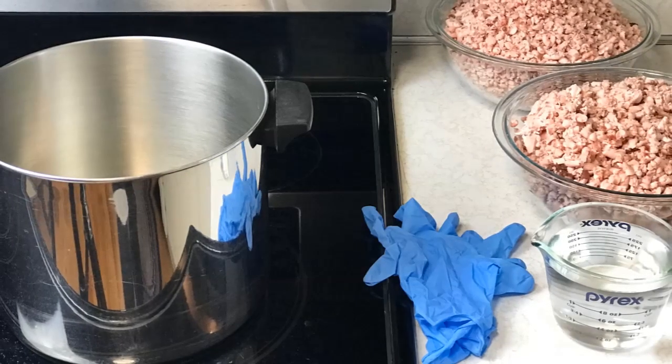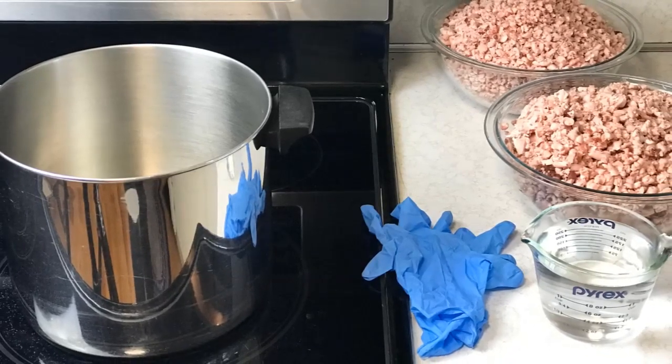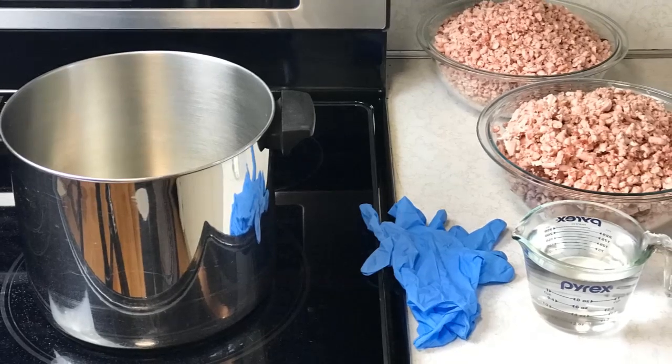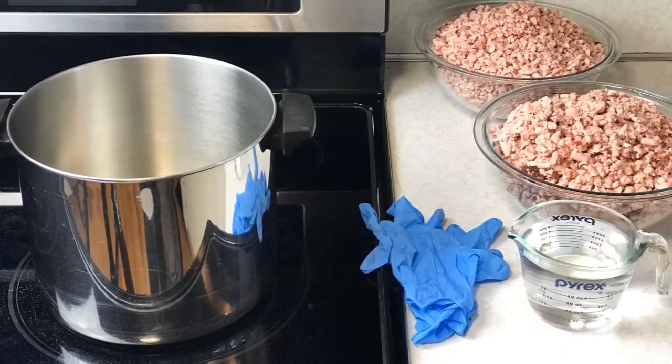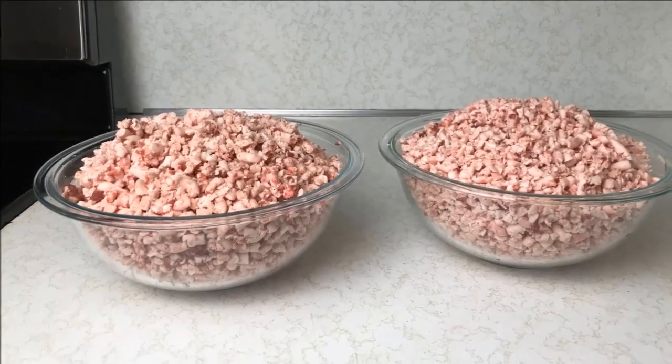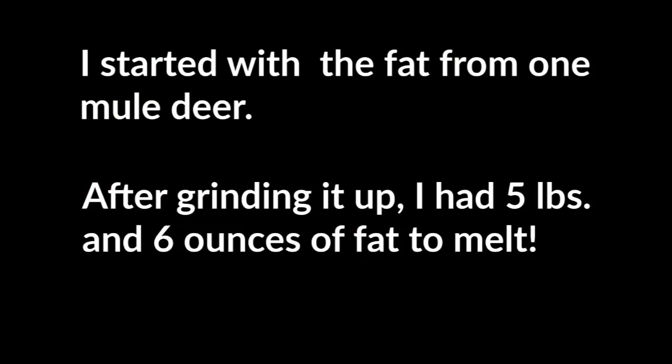Before I melt everything down I weighed the fat trimmings that I started with. It's really helpful to know how much scrap fat is needed to produce a certain amount of tallow. This isn't always an exact process but it gives you a better idea of how much fat you need to start with to make the amount of soap that you want. I'm starting with 5 pounds 6 ounces of ground fat trimmings. At the end of this video I'm going to weigh the final end product to see how much tallow we get from that.